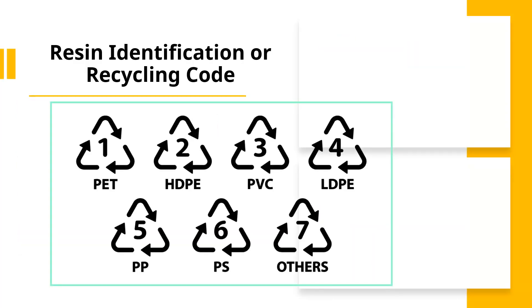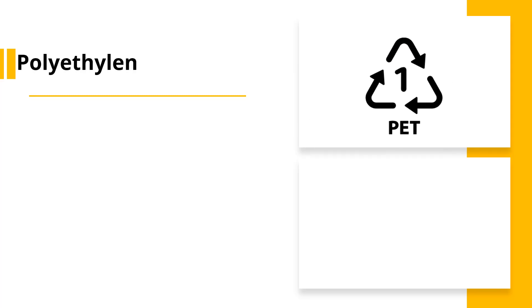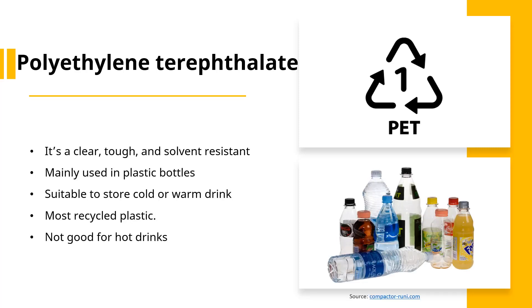These numbers vary from 1 to 7. Each number identifies a different plastic. Number 1 is given to polyethylene terephthalate, or PET polymer. PET is most known for its application in plastic bottles. It is a clear, tough, solvent resistant, and most recyclable polymer. This recycling number can be found in plastic products where transparency is the primary requirement.